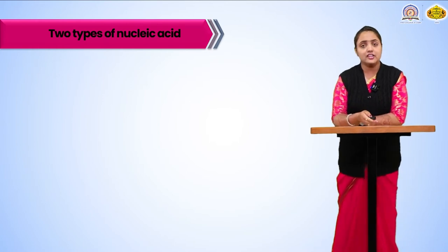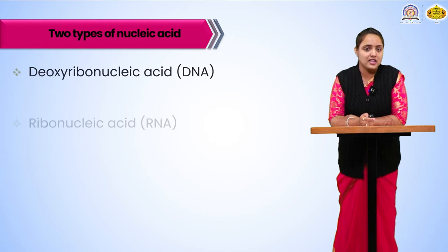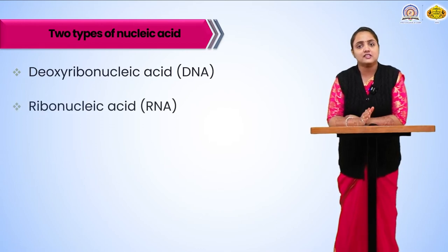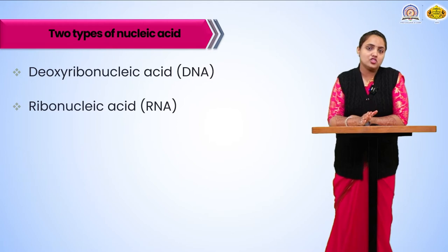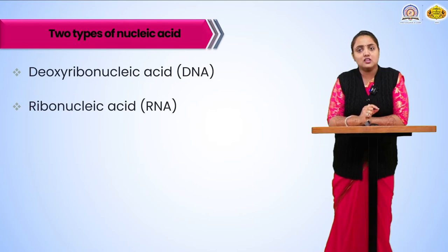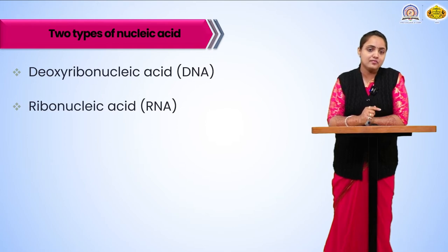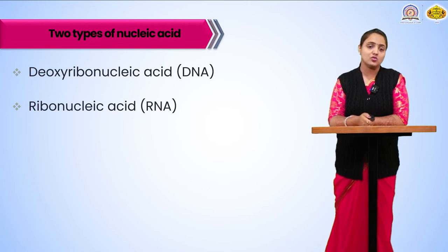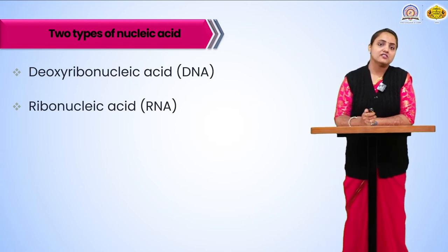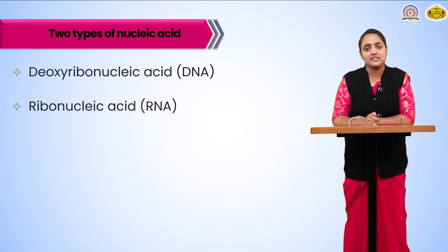The types of nucleic acid are two: one is DNA and one is RNA. DNA, its full name is deoxyribonucleic acid. It is called deoxy because on the third position of the pentose sugar the oxygen group is absent. In RNA, the oxygen group is present, so it is ribonucleic acid — ribo because the ribose sugar is present, which is a pentose sugar, and nucleic acid because it is present in the nucleus.